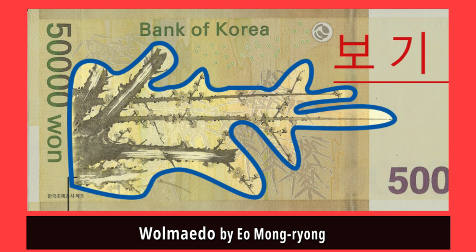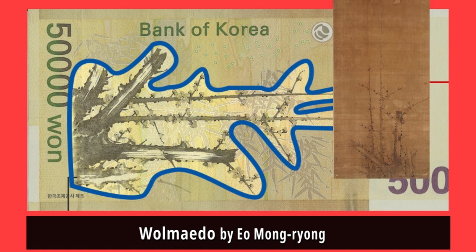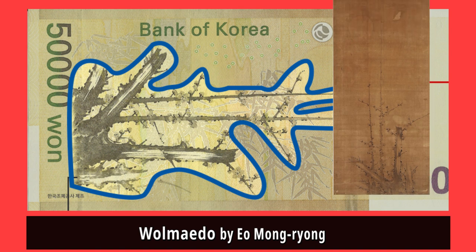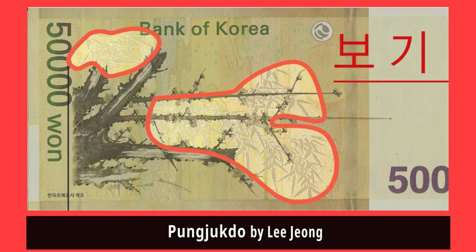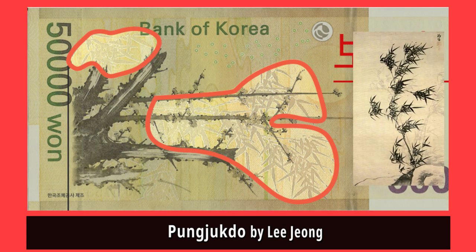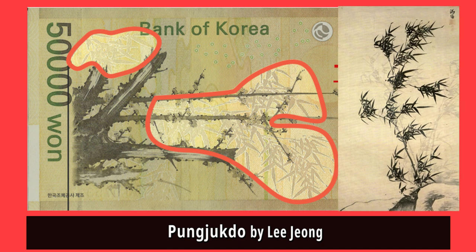On the back of the 50,000 won bill, you can see 'Wall Meadow' by O Mongnyong, which shows a beautiful scene with a Chinese plum tree and the shining moon, and Pungjukdo by Yi Jeong, which shows bamboo stalks swaying against the wind.